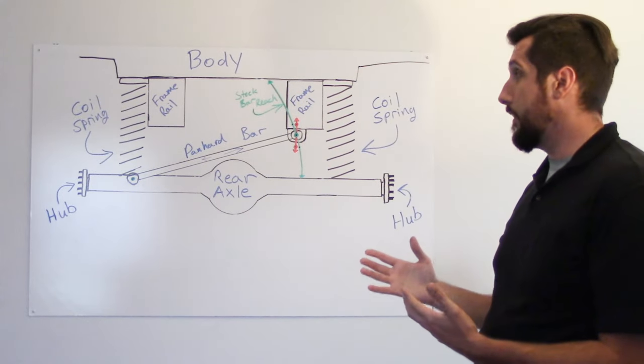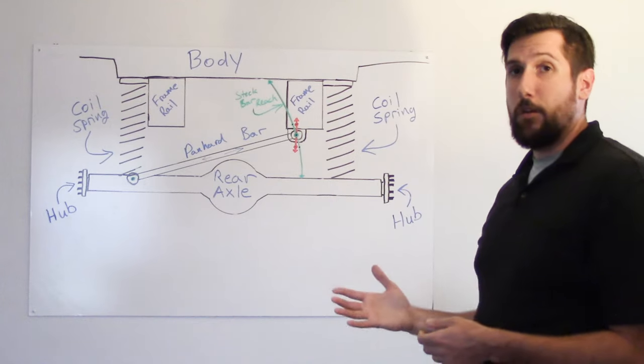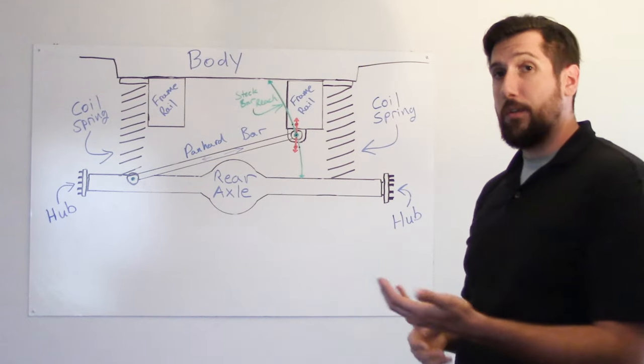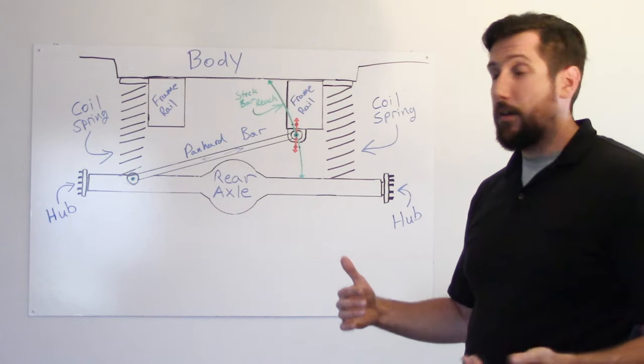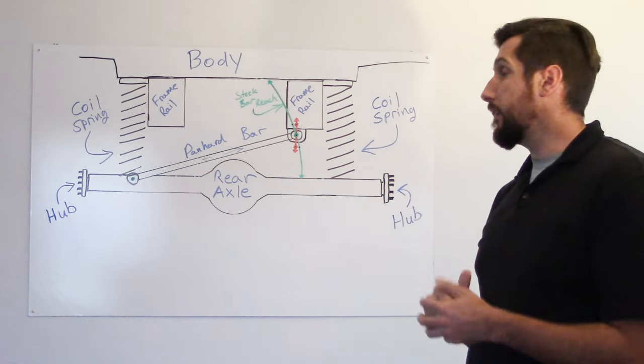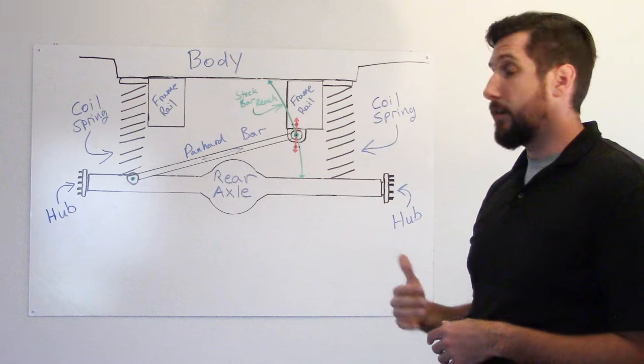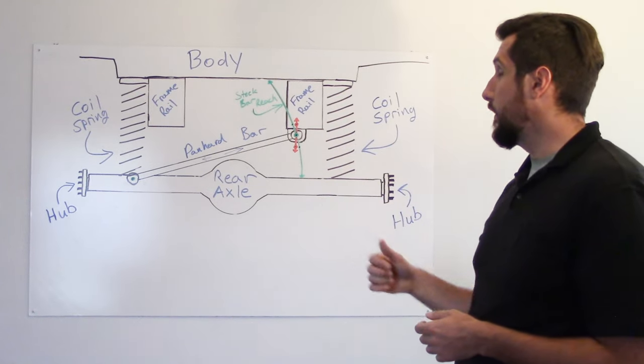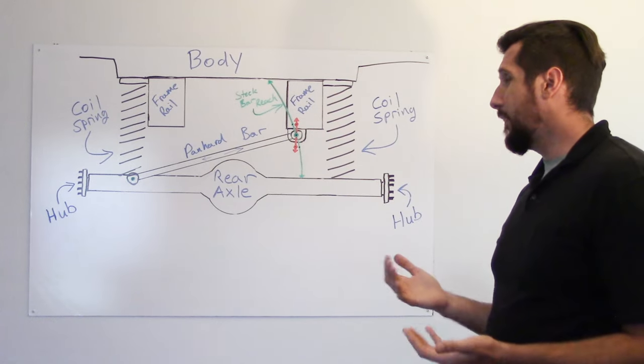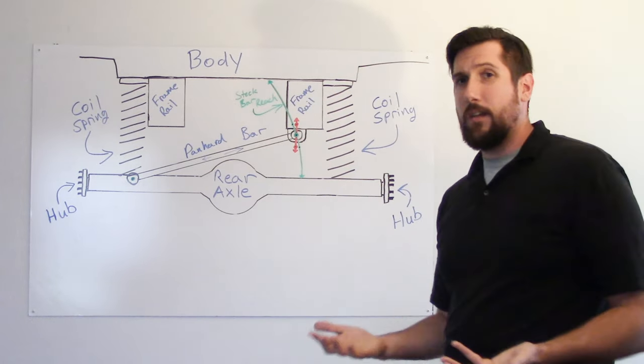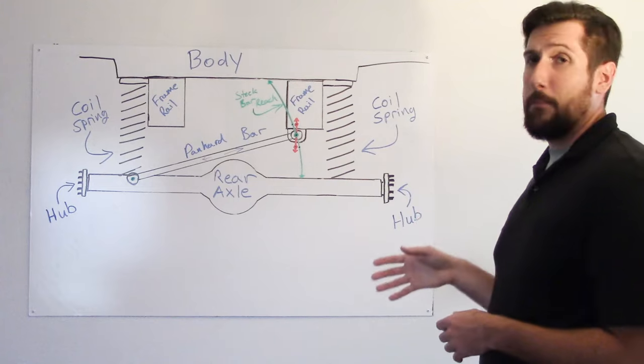So, to remedy that, we use an adjustable panhard bar so we can make it longer or shorter. If we're lowering the vehicle, we get a shorter bar, and we can fine-tune it with those adjustments. If we're lifting the vehicle, it's going to need to be a little bit longer to reach over and to not throw everything off balance and shift things around. So it's really simple. As you saw in the installation video, it's not hard to do, but it's something to keep in mind.